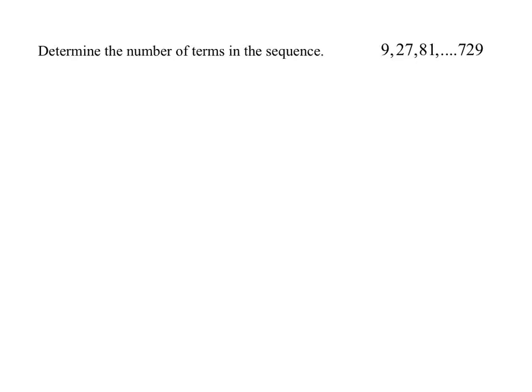First we want to establish the pattern so we know whether this represents an arithmetic or a geometric sequence. From 9 to 27 and then 27 to 81 it looks like we're multiplying by 3. So this tells me that the sequence is definitely geometric and the common ratio, what I'm multiplying by repetitively, is r equals 3.